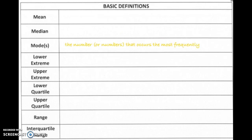To get the mode, that's just the number or the numbers that occur the most frequently. The lower extreme is a fancy way to say the minimum value in a data set, and the upper extreme is the fancy way to say the maximum value in the data set.